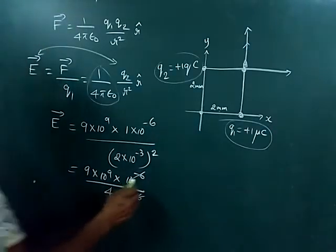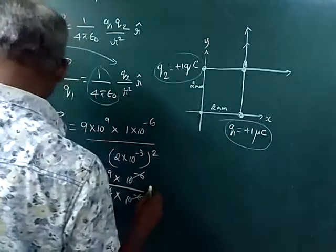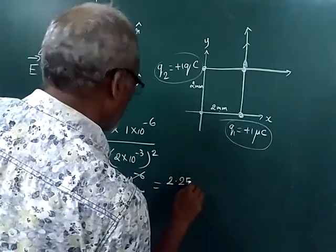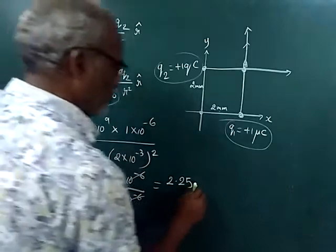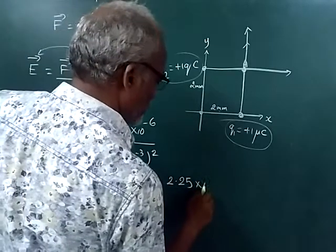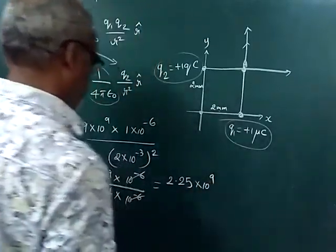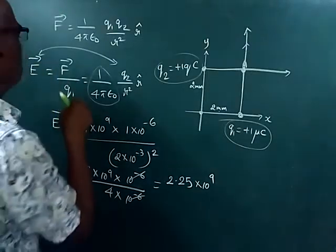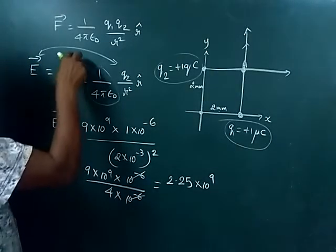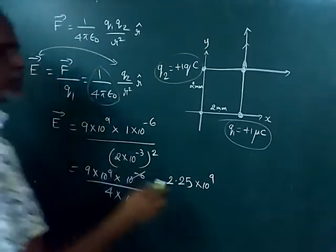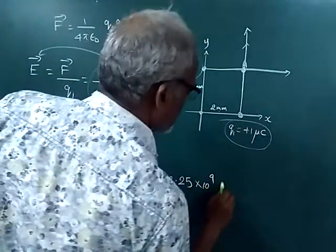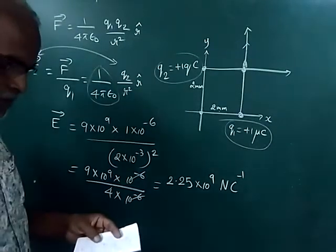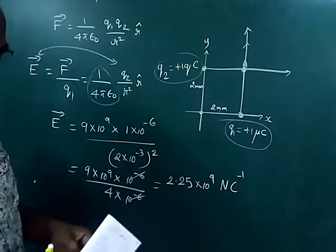So 9 divided by 4 gives 2.25, and the result is 2.25 × 10⁹. The unit of electric field is force by charge, so Newton per Coulomb. So this is the first part of the answer.